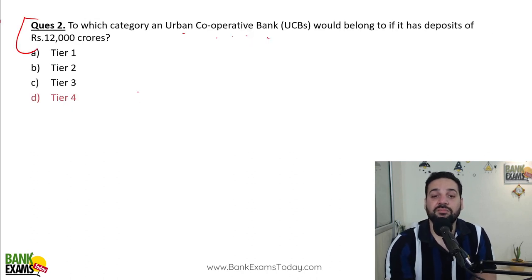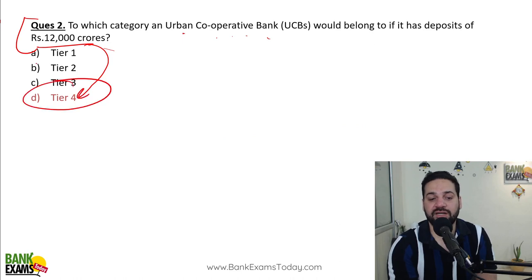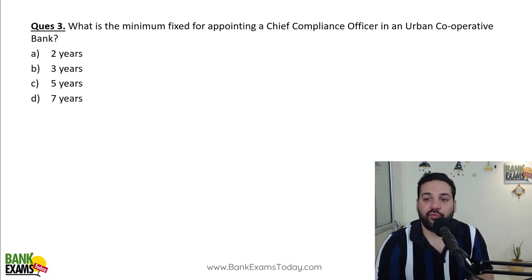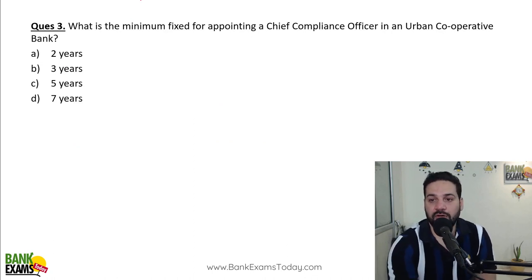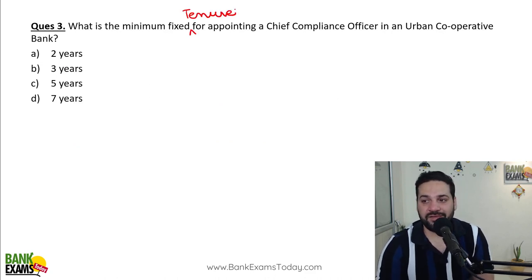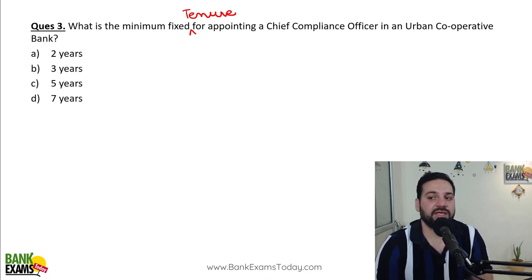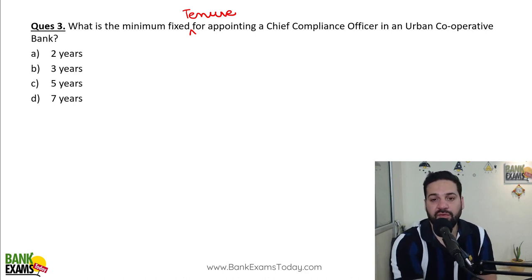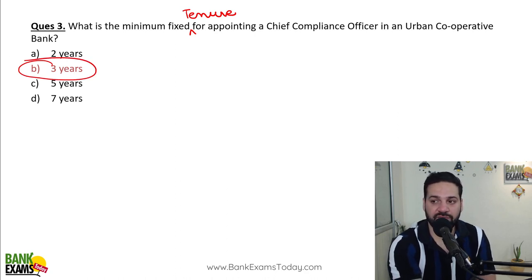So, 12,000 crore is more than 10,000 crore, making it a Tier 4 urban cooperative bank. Next: what is the minimum fixed tenure for appointing a Chief Compliance Officer in an urban cooperative bank? This is a very important question — this circular itself is very important. The answer is three years — three years is the minimum fixed tenure for appointing the CCO in an urban cooperative bank.